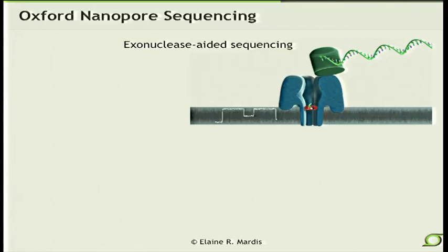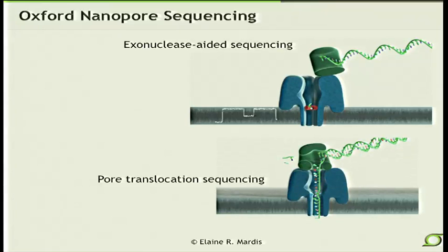There are two flavors being proposed by Oxford Nanopore. One is exonuclease-aided sequencing — you can see a lipid bilayer, a nanopore with a sensor, and an exonuclease poised right at the top which would routinely and uniformly cleave off the DNA bases in the strand, with an electrical field that would suck them through and detect them one at a time in a neat and orderly fashion. And if you can detect the sarcasm in my voice, you can imagine the ways in which that might go wrong — I don't think biology is always that neat and orderly.